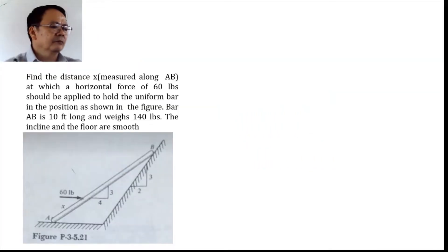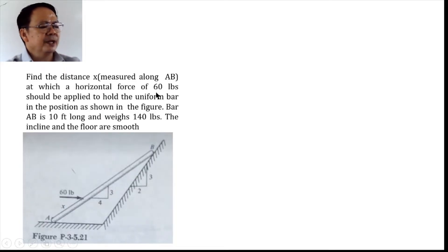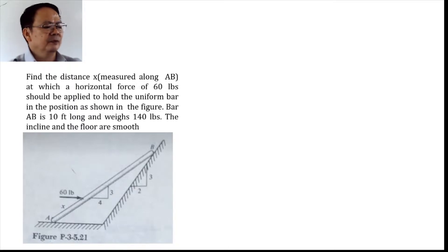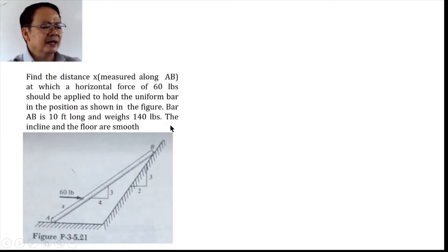The problem goes like this: Find the distance x measured along AB at which the horizontal force of 60 pounds should be applied to hold the uniform bar in the position as shown. Bar AB is 10 feet long and weighs 140 pounds. The incline and the floor are smooth.